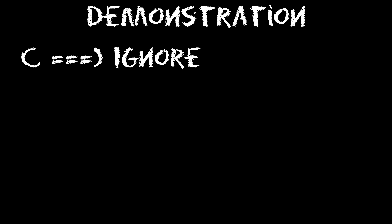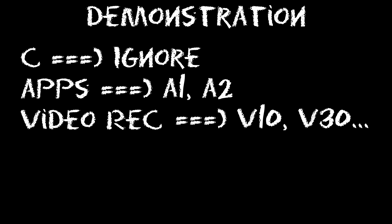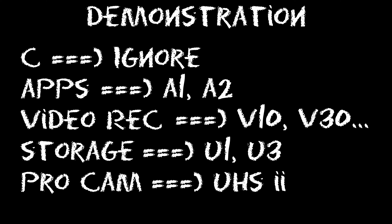So let's go over all these numbers again. Always ignore the C number. If you are buying the card for apps, look for the A symbol. For video recording, check the V number. If you are looking for extra storage only, U1 might be enough, but for a smoother experience go with U3. Only use UHS Express 2 if you want it for video recording on pro cameras, since all I2 cards are V60 or V90.